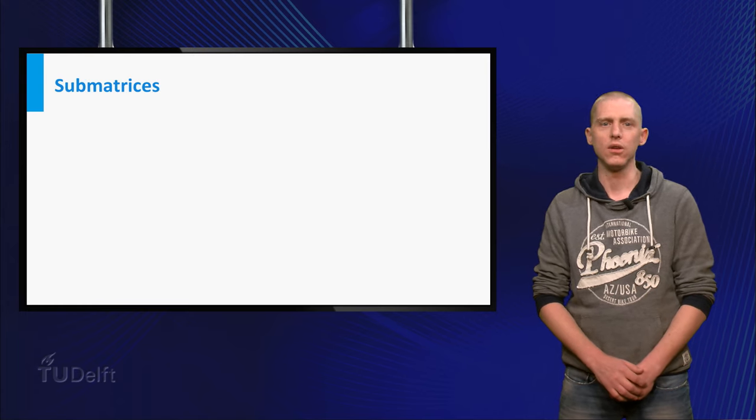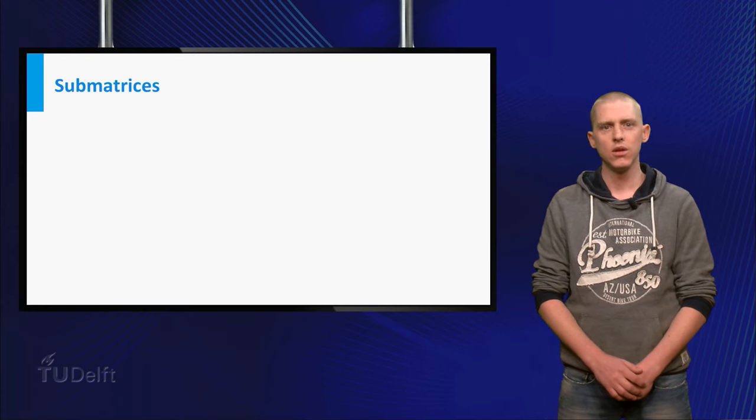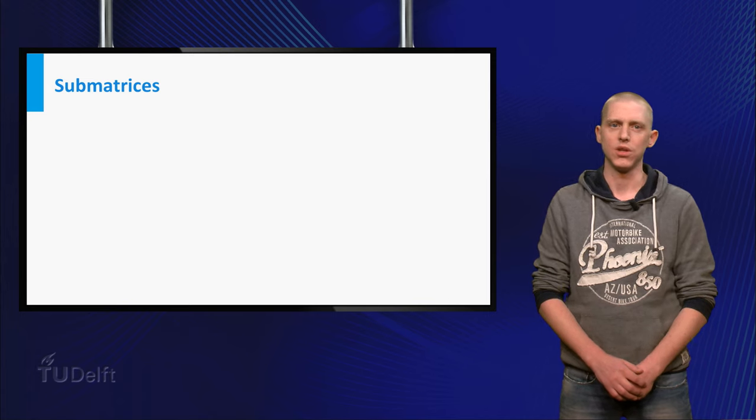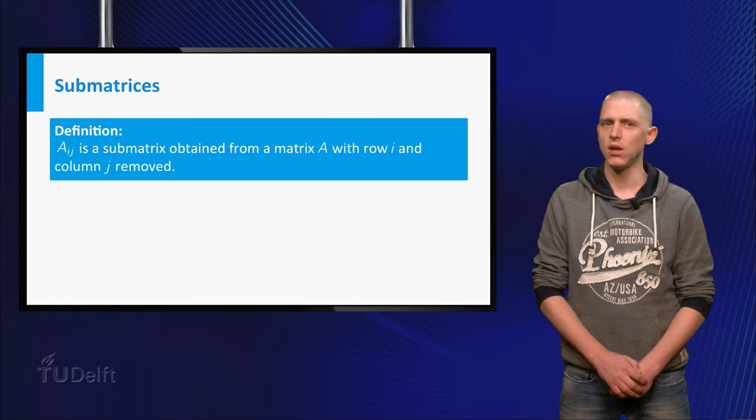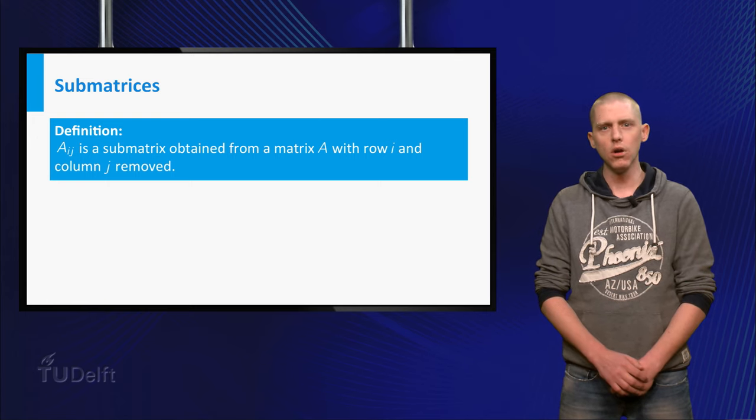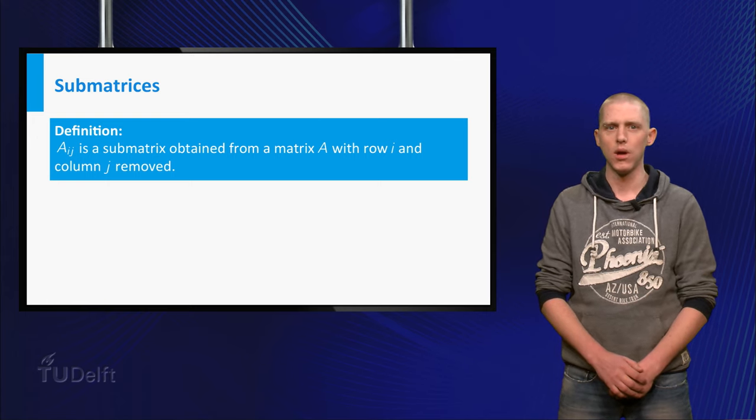To obtain the determinant for an n by n matrix A, you first need to learn some notation. Aij is a submatrix obtained from A, where you have removed row i and column j from A.